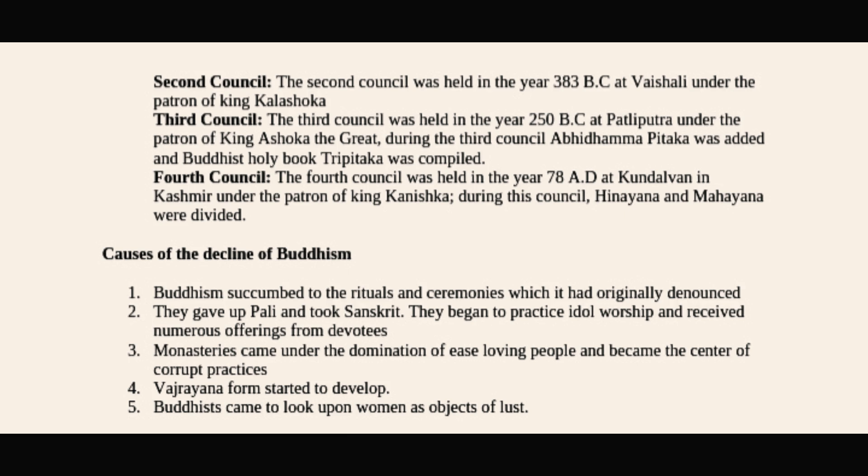The fourth Buddhist Council was held at Kundalvan in Kashmir, under the patronage of King Kanishka. During this council, Hinayana and Mahayana were divided — this is the council in which these two sects came into existence.